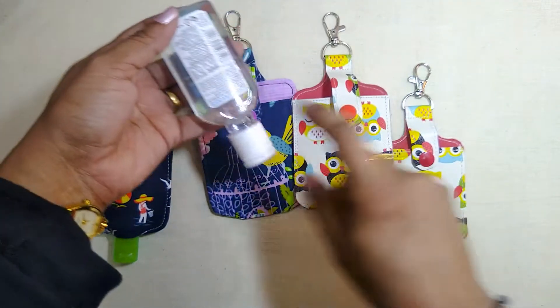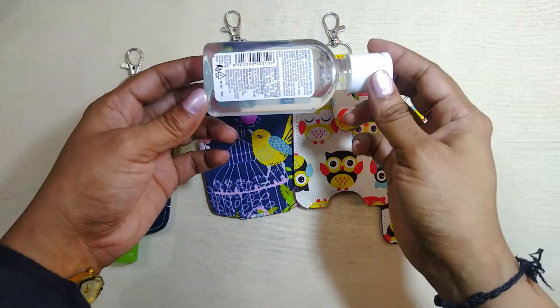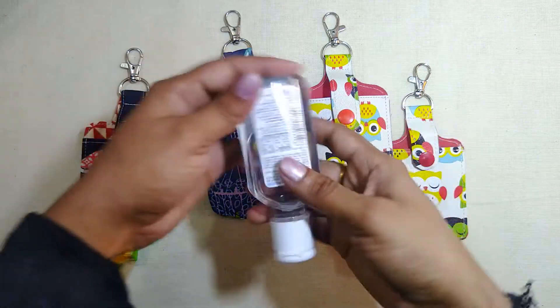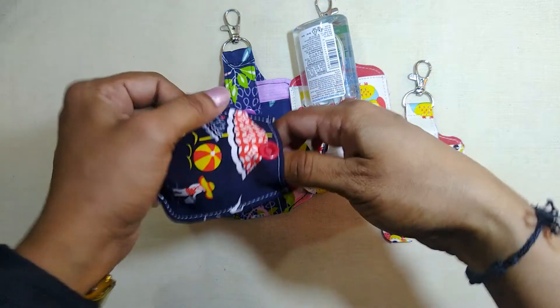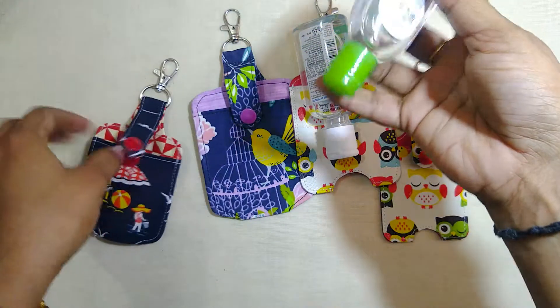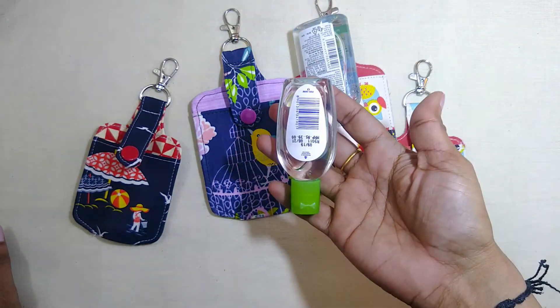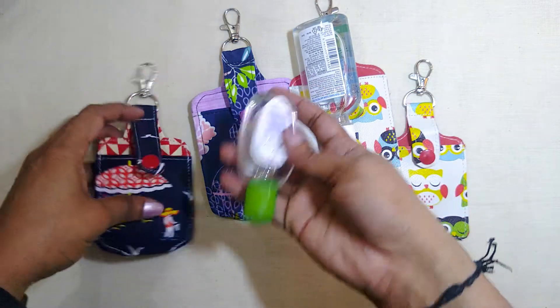The large size is suitable for the larger two ounce or 50ml sanitizer bottles, and the smaller size is perfect for the smaller one ounce or 25ml bottles.